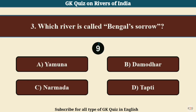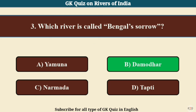Question No. 3. Which river is called Bengal's Sorrow? Answer B: Damodar.